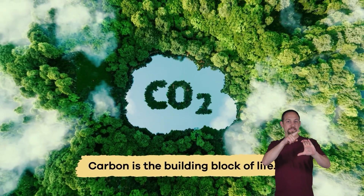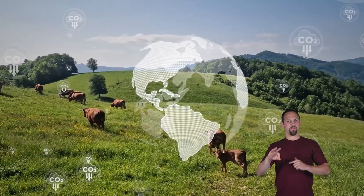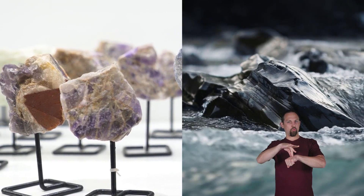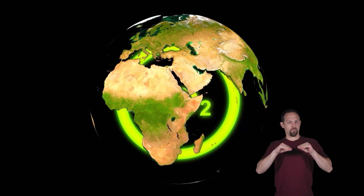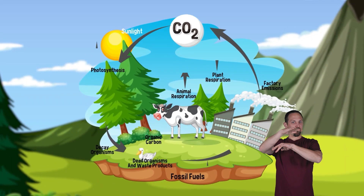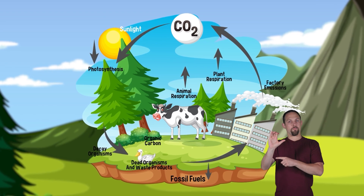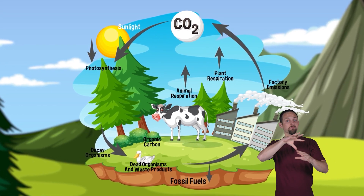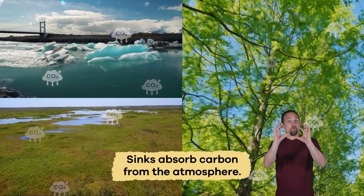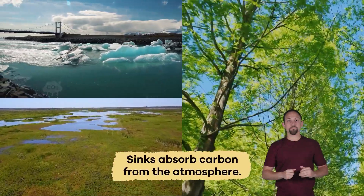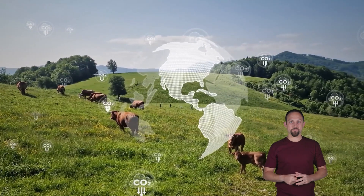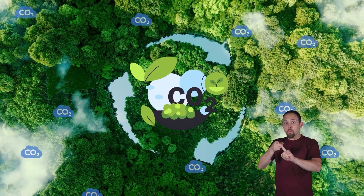Carbon is the building block of life. It is important for the existence of nearly all organic and inorganic material on earth. Carbon moves around the earth and is exchanged between living things, dead things, and the air through a process called the carbon cycle. This cycle includes sources that release carbon into the atmosphere, sinks which absorb carbon from the atmosphere, and reservoirs that store carbon. There is not a specific starting or ending point to the carbon cycle.